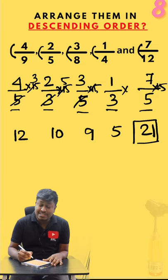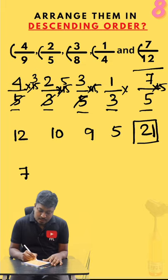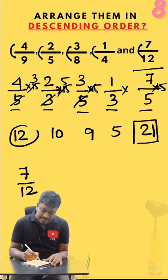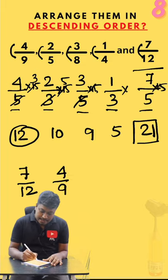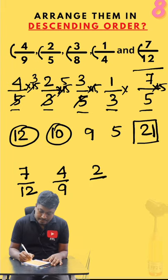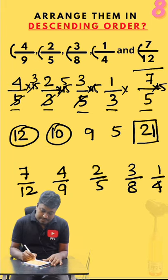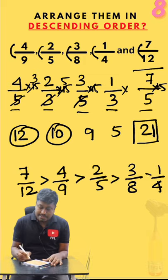Now 21 is the first largest, so 7/12 will be the largest among all. Next largest is 12, which is 4/9. Next will be 10: 2/5 and 3/8, 1/4. Finally, we have arranged the given numbers in descending order.